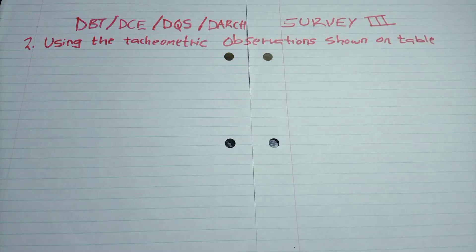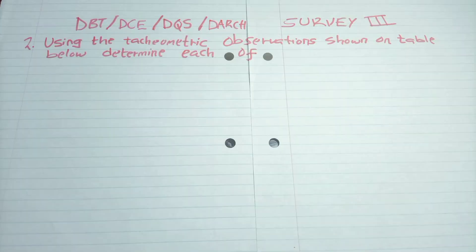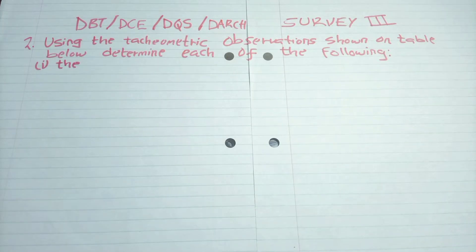Using the tachometric observation shown on the table below, determine each of the following. So the first is the reduced levels of P, Q, and R.